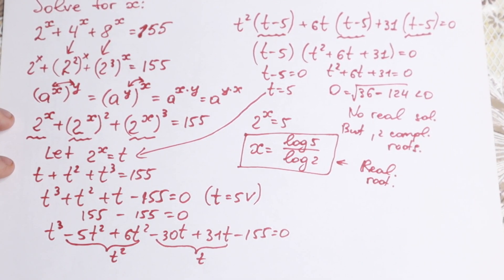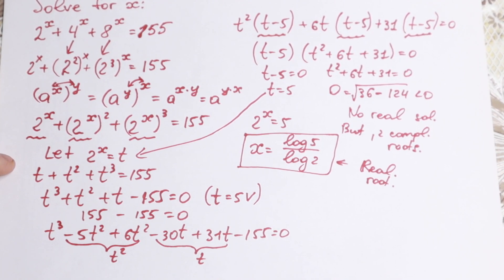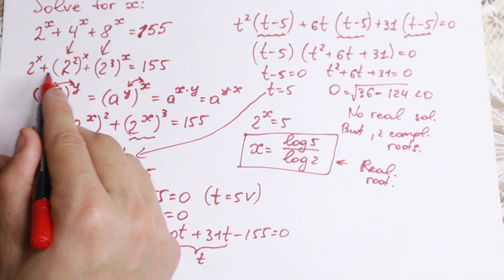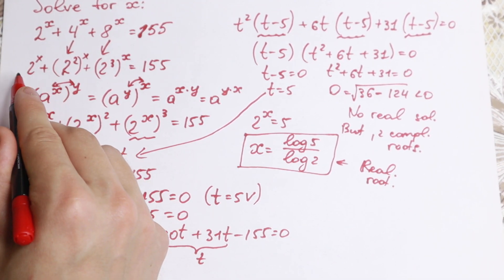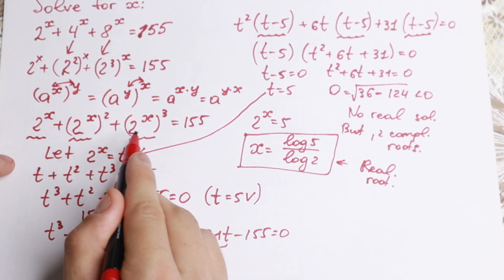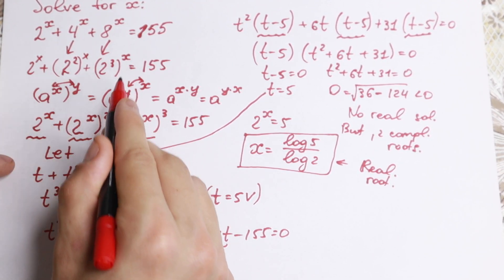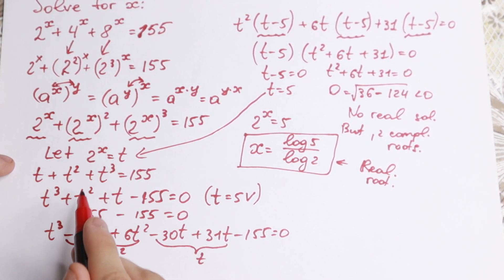Of course there are many approaches to solve this problem — you might find another method. To summarize: the key steps were creating the same base for all terms, applying the substitution, and then solving the resulting cubic equation. The main difficulty is usually the cubic equation step.